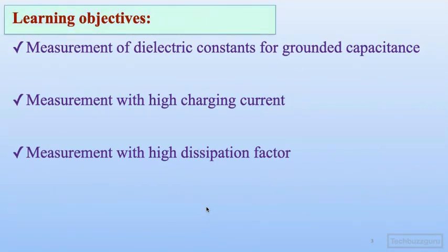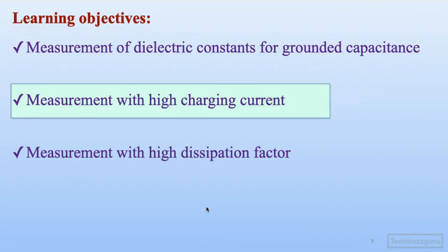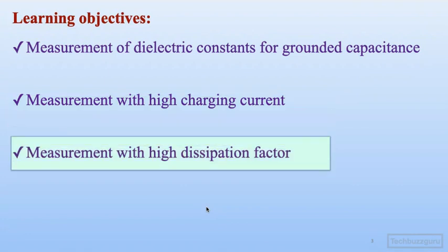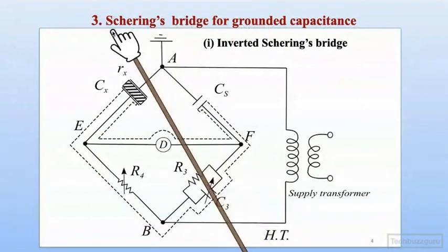The learning objectives for this topic are: first, to measure electrical constants with respect to grounded capacitances such as underground cables whose outer coating is at ground potential; second, measurement with respect to high charging currents from cables and capacitor banks; and third, measurement with high dissipation factor. So three different versions of the Schering bridge will be considered.